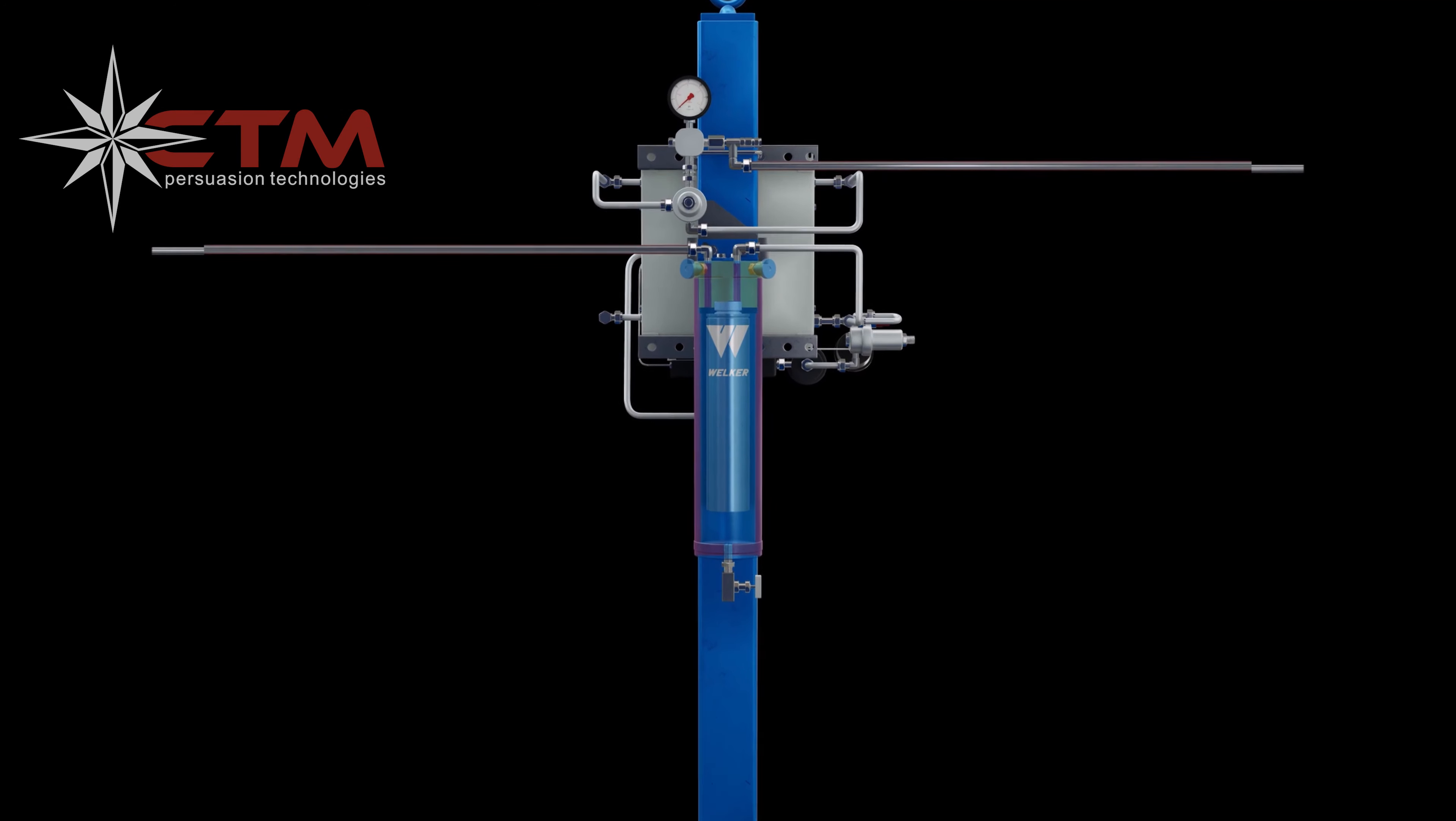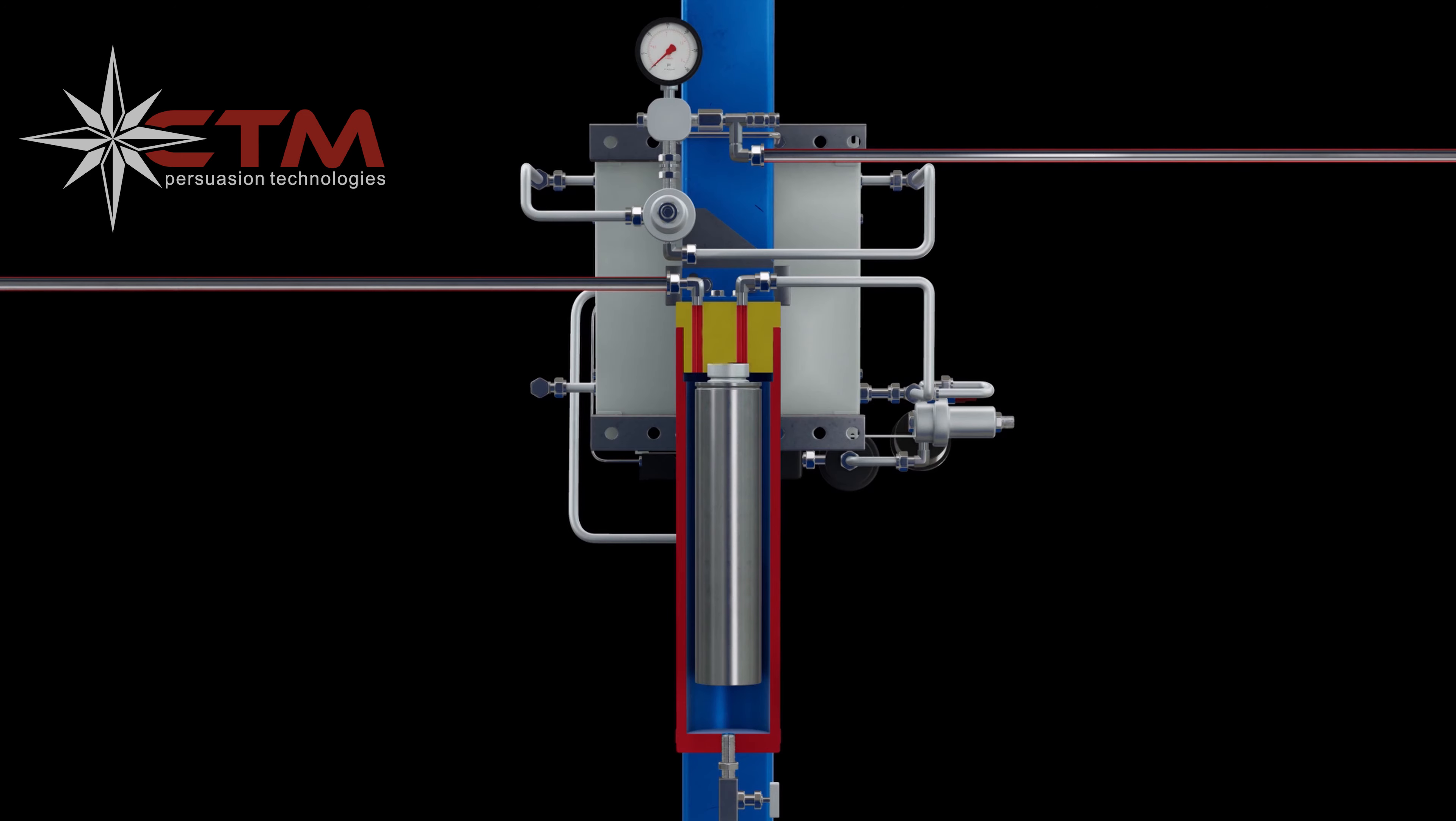The filter dryer removes contaminants from the dried gas before feeding the downstream instrument. Gravity causes the separated liquids to fall to the bottom of the liquid dump, where they collect until the unit is drained.